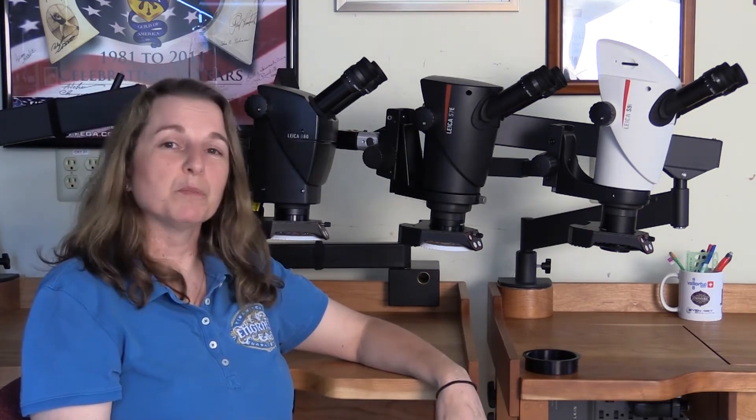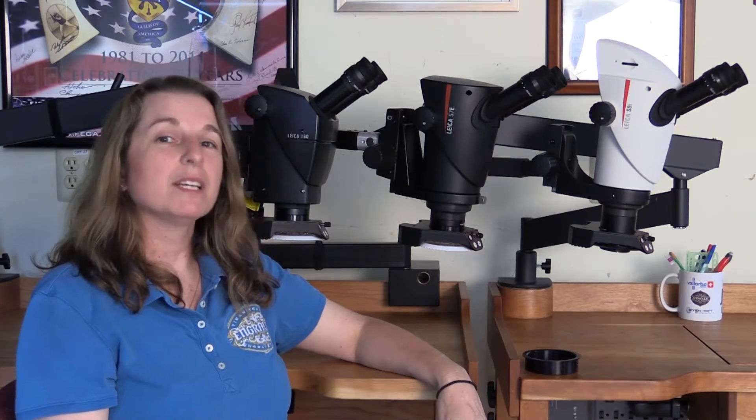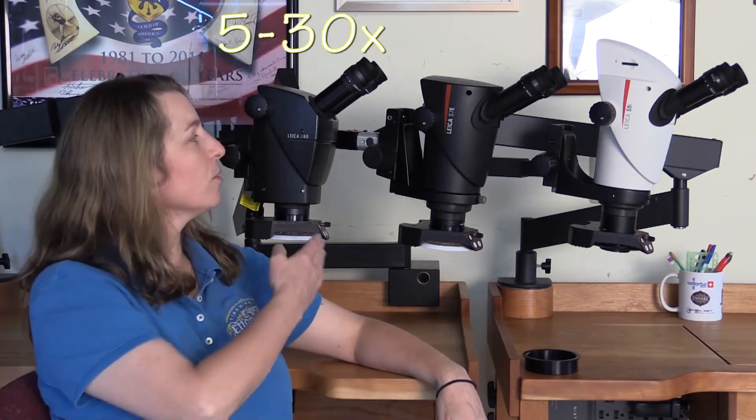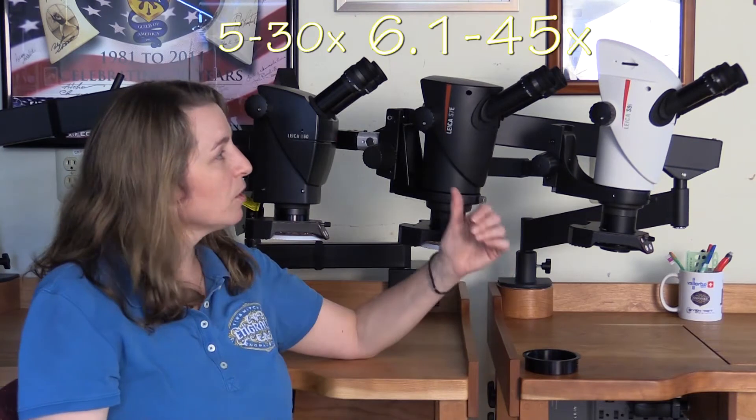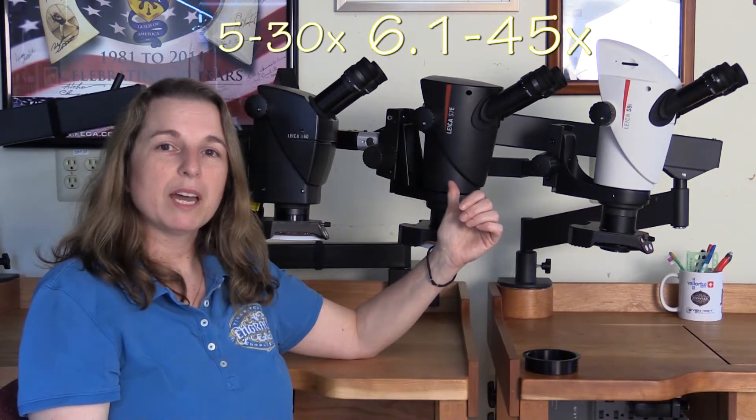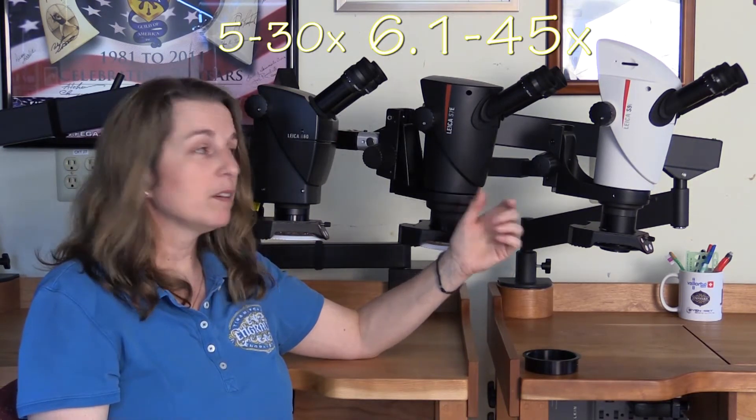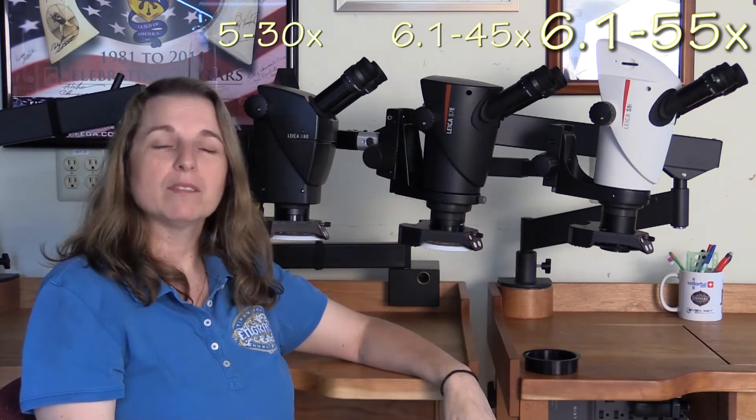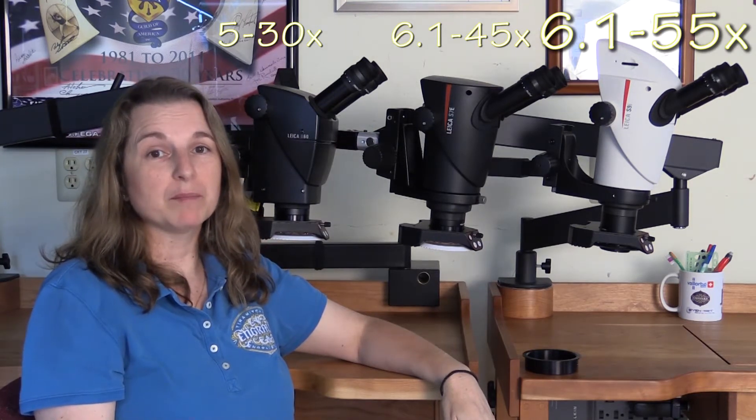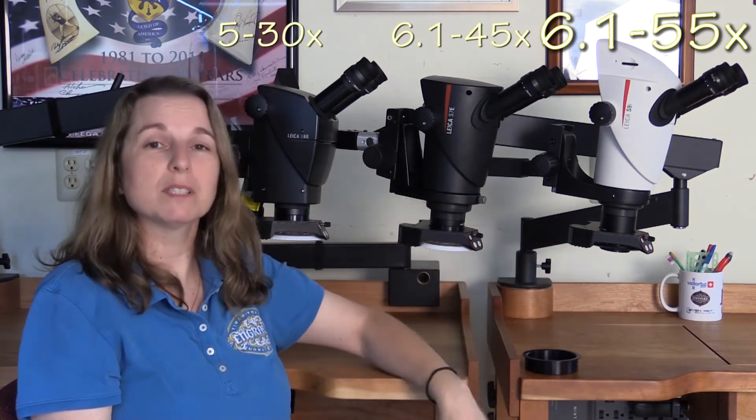Some of the differences between these scopes are in magnification. For the A60 we have 5 to 30, for the S7 we have 6.1 to 45, and for the S9 we have 6.1 to 55 times. So quite a bit of difference in magnification.